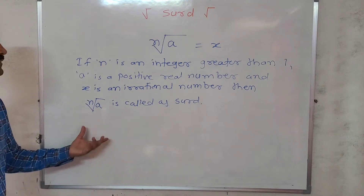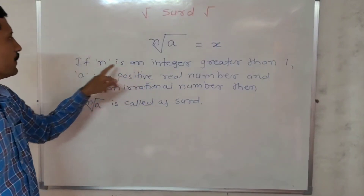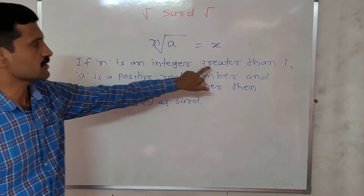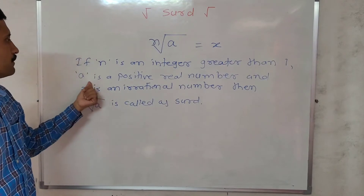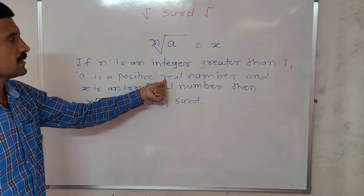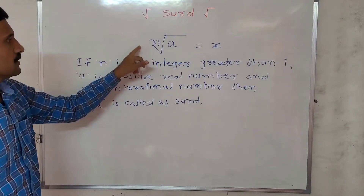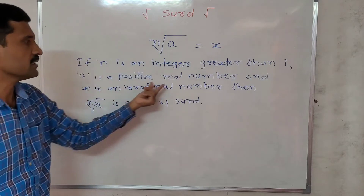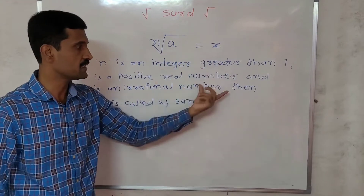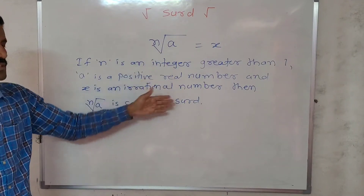First of all let us have the definition of CERT. If nth root of a is equal to x, where n is any integer which is greater than 1, and a — which is called the radicand — is a positive real number, then x, that is nth root of a, must be an irrational number. So if these three conditions are satisfied then we say that nth root of a is a CERT.